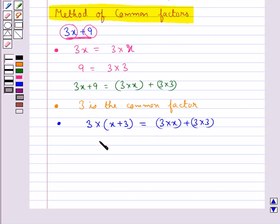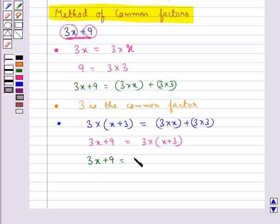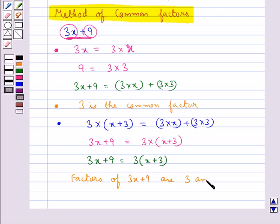So we write 3x plus 9 as 3 into x plus 3. The factors of the given expression 3x plus 9 are 3 and x plus 3, and these are the irreducible factors.